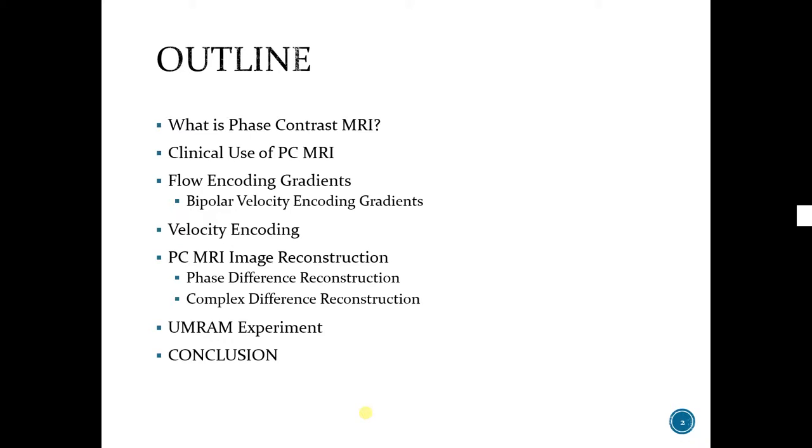I will start with defining phase contrast and its clinical use. I will continue with flow encoding gradients, bipolar velocity encoding gradients in particular. I will also mention velocity encoding, which is an important parameter in PC MRI. I will briefly talk about PC image reconstruction techniques, phase difference reconstruction, complex difference reconstruction, and my UMRAM experiment. And I will conclude the presentation with comparison with other flow imaging techniques.